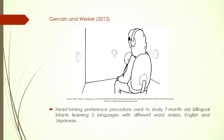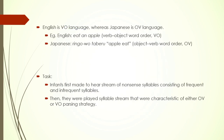Another kind of study used head turning preference to study 7-month-old bilingual infants learning L2 with different word orders — English and Japanese. The child sits on the mother's lap and listens to various sounds; depending on the head-turning preference, they find out how incoming stimuli are being processed. The bilinguals were English-Japanese bilinguals, and English and Japanese have opposite word order: English is a VO language whereas Japanese is an OV language — for example, 'eat the apple' in English versus 'apple eat' in Japanese.